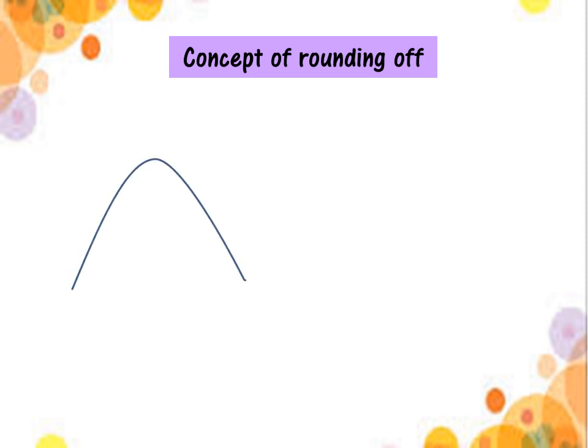Let's look at the concept of Rounding Off. Look at this diagram — it's a hill. Gambar seperti bukit. I label 0 on the left side and 10 on the right side. Di hujung kaki bukit, saya letakkan 0 dengan 10. And this is a boy who is riding up his bicycle to the top of the hill. On the top at the middle is 5. Saya labelkan 5 di puncak bukit.